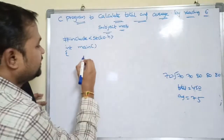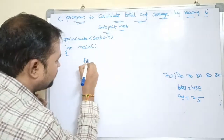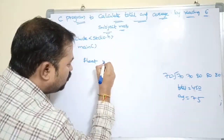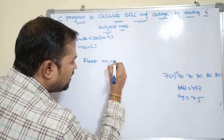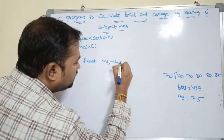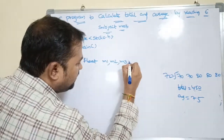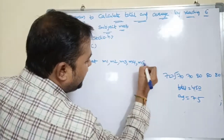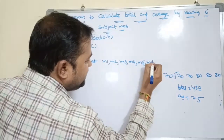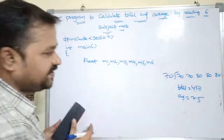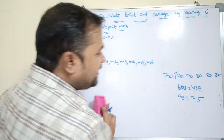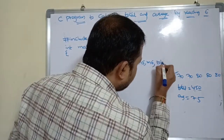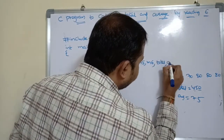So how many subject marks are needed? 6 subject marks. So let us declare them as float: float m1, m2, m3, m4, m5, m6. So 6 variables. Next we also need total and average, so declare float total, avg.